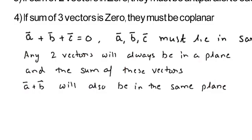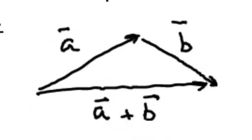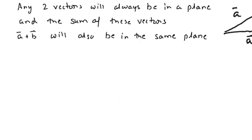We can always draw a plane passing through two vectors. The sum of these two vectors will also be in the same plane. Thus, A vector plus B vector must be in the same plane as A vector and B vector.